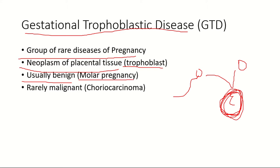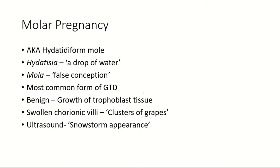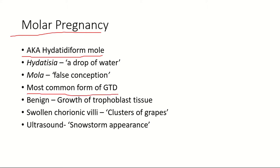Luckily this condition is usually benign, as seen in molar pregnancy, and rarely it can be malignant, as in choriocarcinoma. Molar pregnancy is also known as hydatidiform mole. The word 'hydatidiform' is derived from the Greek 'hydatisia,' meaning a drop of water, and 'mole' is derived from the Latin 'mola,' meaning false conception. There is a mass of cysts filled with fluid, giving the appearance of a normal pregnancy, but it is a false pregnancy. It is the most common form of gestational trophoblastic disease — a benign neoplasm with growth of trophoblastic cells.